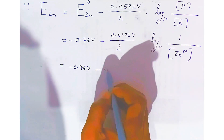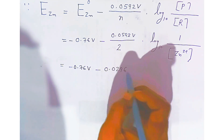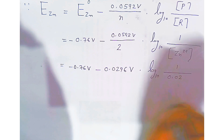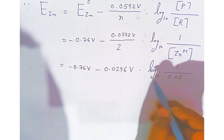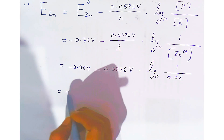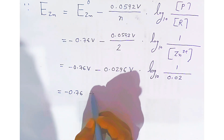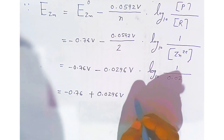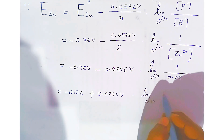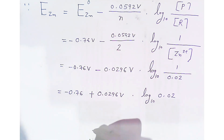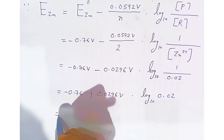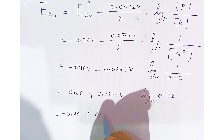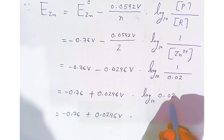Simplifying: 0.0592 / 2 gives 0.0296. We write minus 0.76 volt plus 0.0296 volt times log base 10 of (1 / 0.02) — the denominator moves to numerator so the minus becomes plus. Now we need to find the value of log of 0.02. We write the characteristic: after the decimal you have a zero before the significant digit 2, so 1 minus 1 gives minus 2, meaning the characteristic is 2̄.